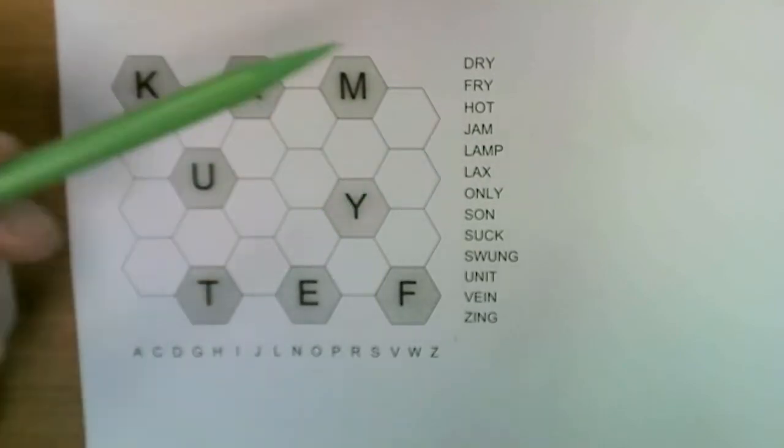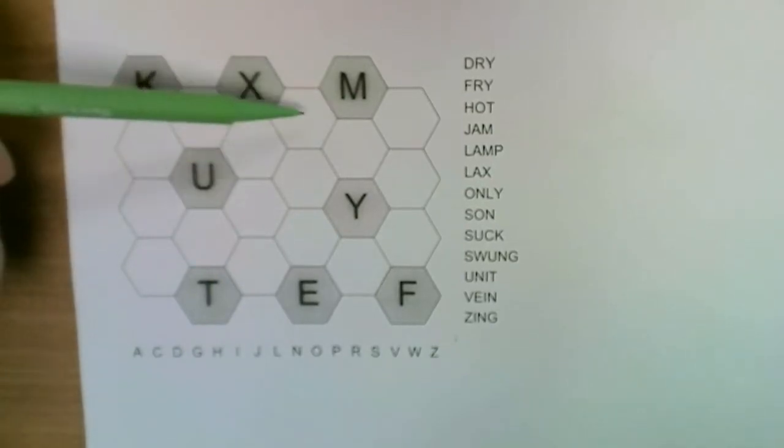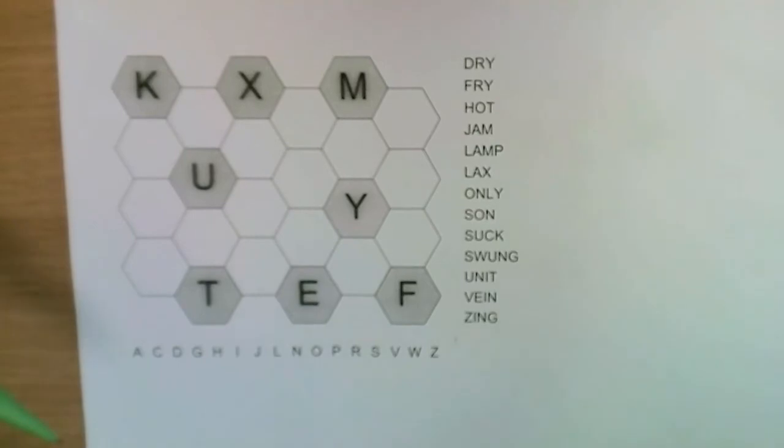For instance the word jam must appear in the grid, so it could be j-a-m or j-a-m and so on, and you have to whittle down the options over time to solve the puzzle.